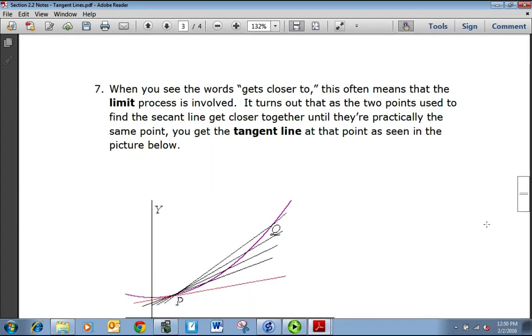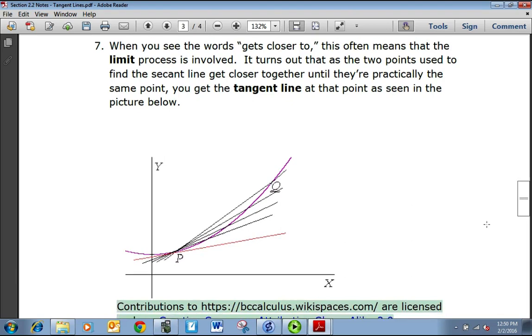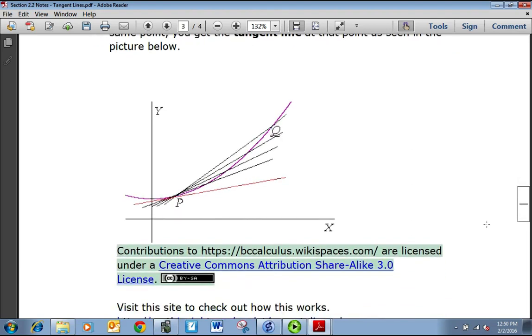When you see the words get closer to, this often means that the limit process is involved. It turns out, as the two points used to find the secant line get closer together until they're practically the same point, you get a tangent line at that point. So this is a picture of what's going on. We start off and we're drawing a secant line way over at Q, between P and Q. And then as we get closer to P, my secant lines have a point that is a little bit closer to the P value.